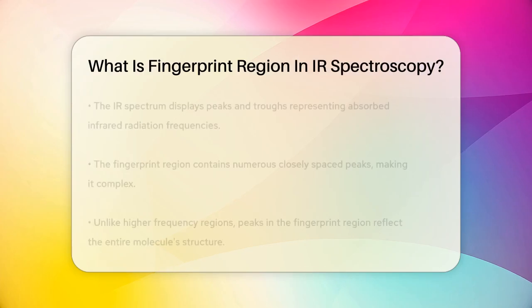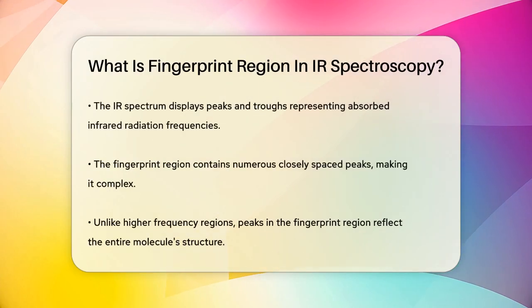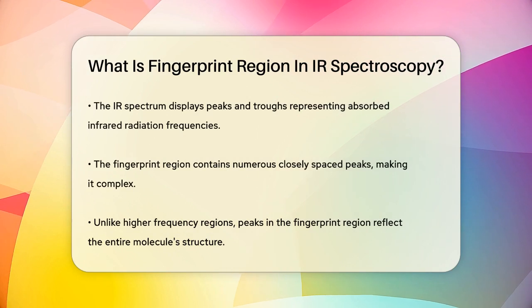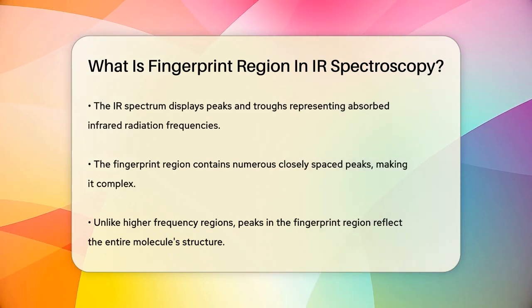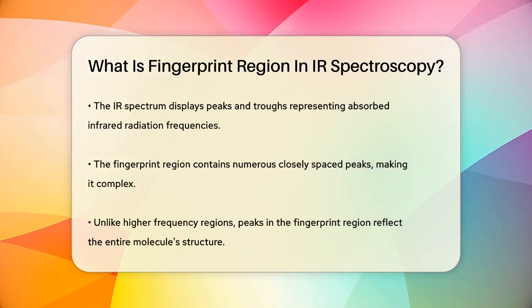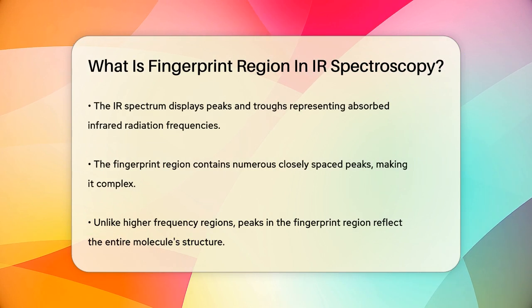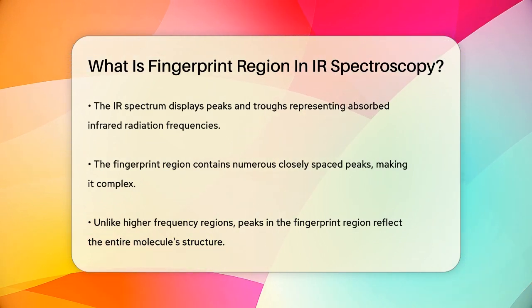The fingerprint region is the part of the spectrum that lies between 1500 cm⁻¹ and 400 cm⁻¹. In this region, the spectrum gets really complex, with lots of peaks that are very close together.